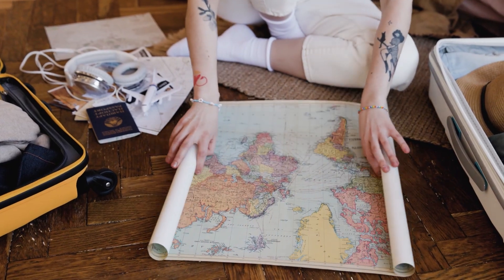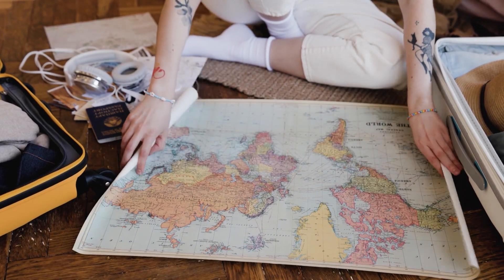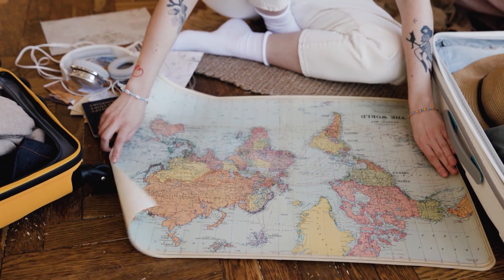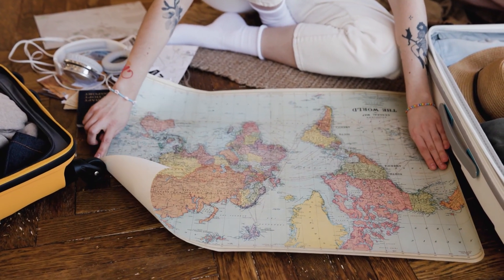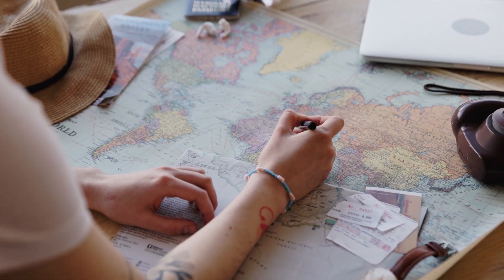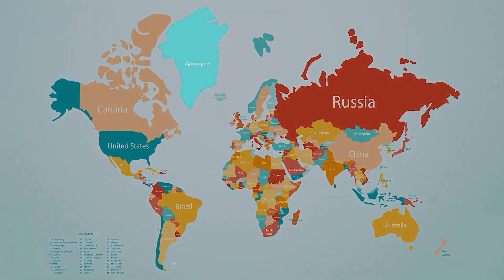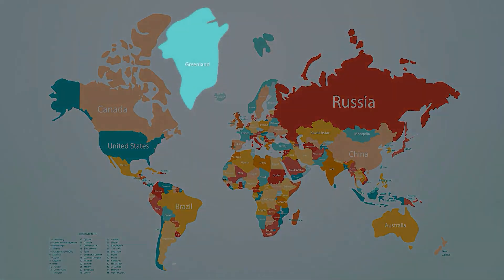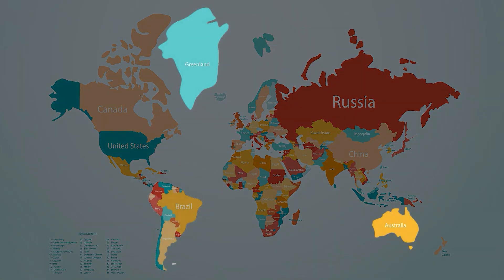Have you ever looked at a world map? Of course you have — everyone has. But here's something that might have escaped your notice. Doesn't Greenland look enormous? Like twice the size of Australia, one and a half times the size of South America, and even bigger than Africa.